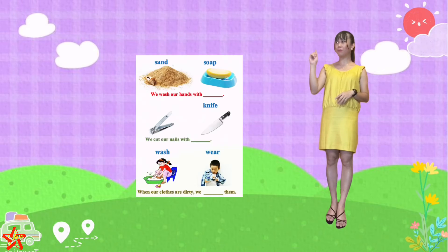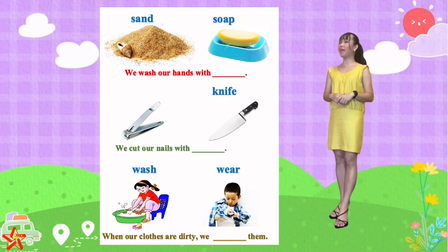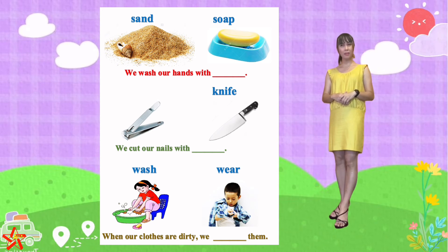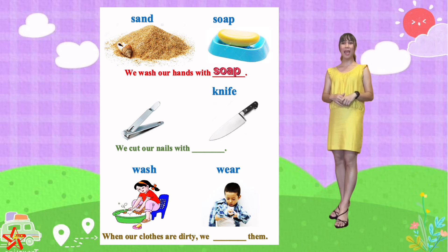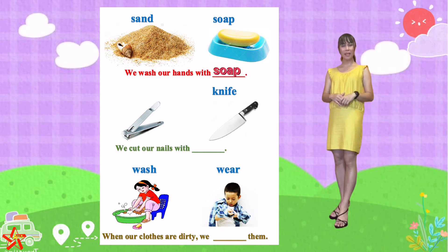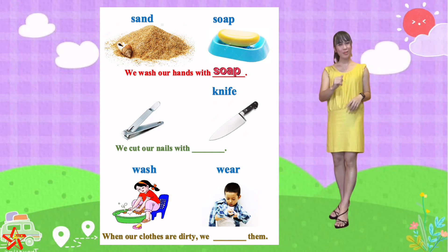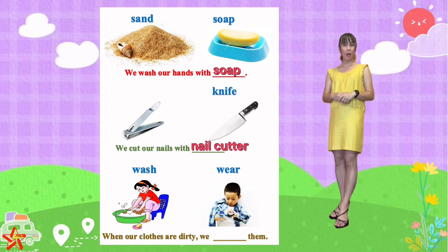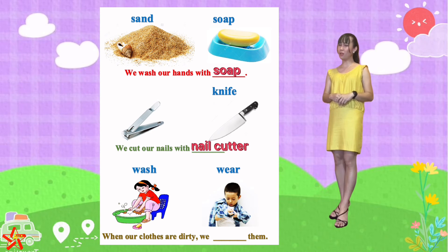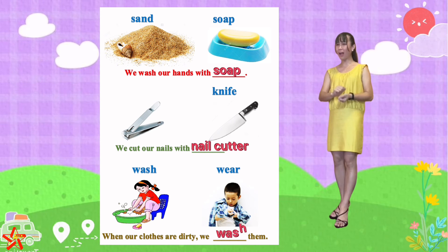Teacher Isa has an activity here. I would like you to complete the sentence using the correct word. Three sets. Set number 1, we have two choices: sand and soap. The sentence: we wash our hands with — very good — soap. Number 2, we have nail cutter and knife. The sentence: we cut our nails with — very good — nail cutter. And the last set, number 3, we have wash and wear. When our clothes are dirty, we — wash or wear? Very good. We wash them.